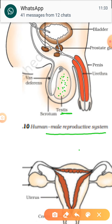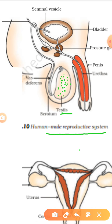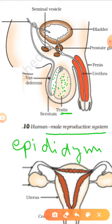After the formation of sperms, sperms get stored in this structure — a white sac-like structure. This sac-like structure is called epididymis (E-P-I-D-I-D-Y-M-I-S). In the epididymis, sperms take rest for some time.